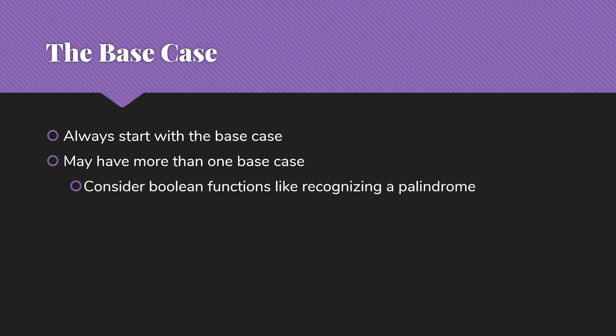Note that you may sometimes have more than one base case. So consider a Boolean function like recognizing a palindrome. That could return true, that could return false. We're going to need a base case that says, I know, here's where I know that it's true. And I also need one that says, here's how I just know it's false. Always consider, do I need more than one base case?